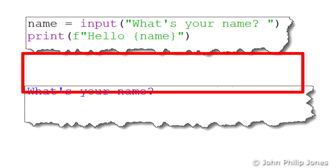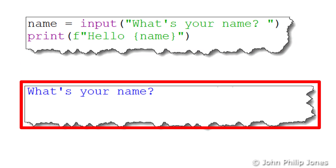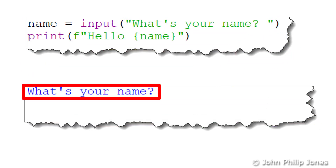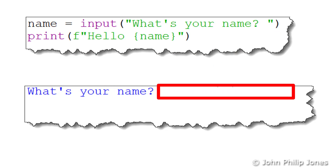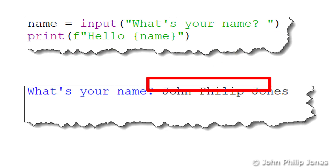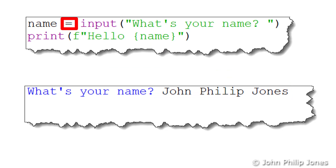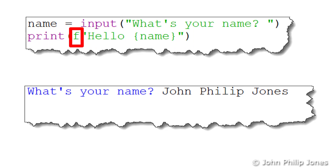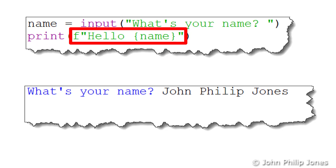I'm going to run the program, and you're going to see that this string here is placed in this position at runtime. I'm then going to enter 'John Philip Jones', and that is then going to be assigned to the variable identifier 'name'. We then go on to this line here, which you can see is using the F string. This means we don't have to use the concatenation operator that we saw in the last program.